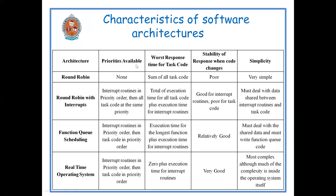First, we will see the priorities available. In round robin architecture, there are no priorities for the tasks. In round robin with interrupts architecture, the interrupt routines are given different priority orders depending on their importance, while all the task code are given the same priority.